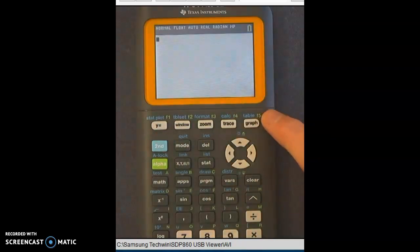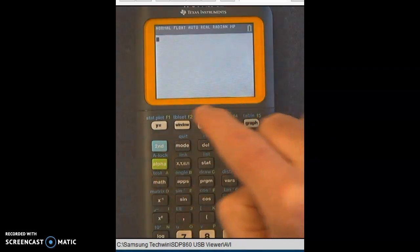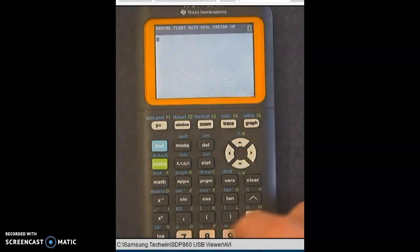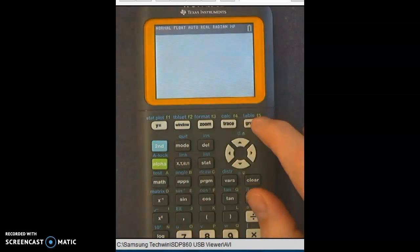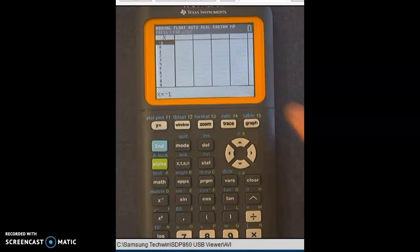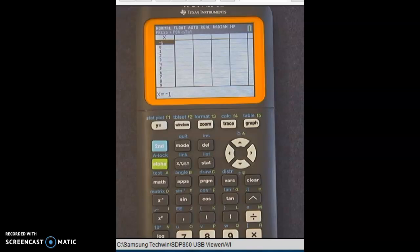By the way, if you want to do anything in green, you would hit the alpha button first. So we're going to just go ahead and hit second graph. That's going to bring me to a table. Now, depending if someone had an equation in there before, this might be filled in, or in my case, it's blank because there's nothing in the calculator yet.